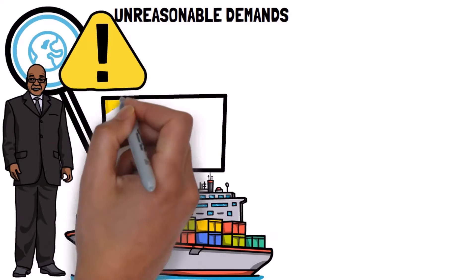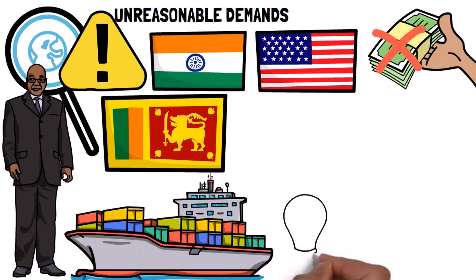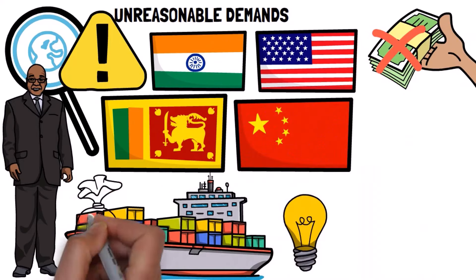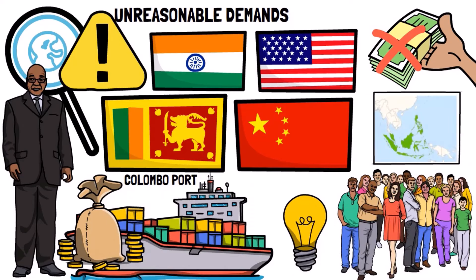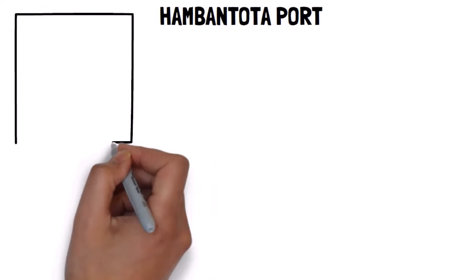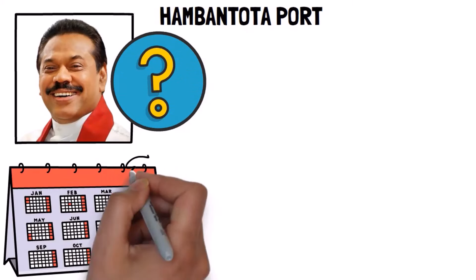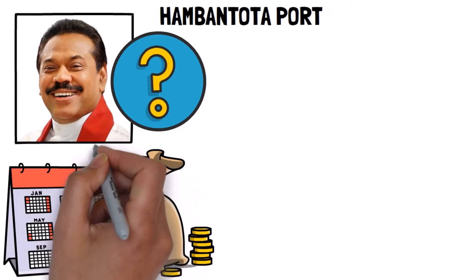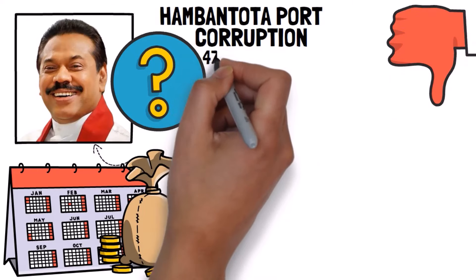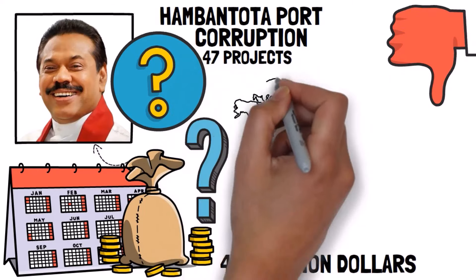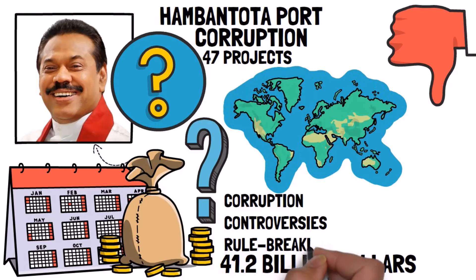Let's take an example, the Hambantota port in Sri Lanka. India and the United States didn't want to pay for it because they didn't think it was a good idea, at least from an economic perspective. But China decided to fund it anyway, even though the people in Sri Lanka weren't so sure about it either. They already had the Colombo port, which handled most of their maritime trade. But the new Hambantota port just happened to be in the hometown of President Mahinda Rajapaksa. What a coincidence, right? In the years that followed, Chinese supporters started giving money to President Rajapaksa's election campaigns. Another coincidence? It might not sound great, but it's hard to say if it's really corruption. But here's the thing, at least 47 projects worth a total of $41.2 billion in 10 countries have been linked to claims of corruption, controversies or rule-breaking, according to aid data and the World Bank.